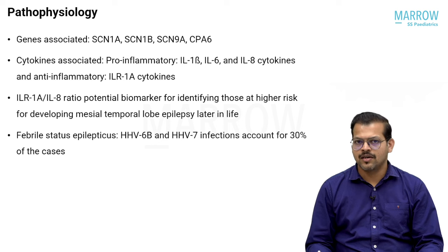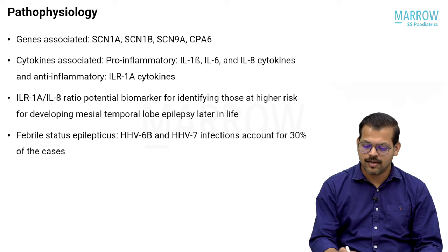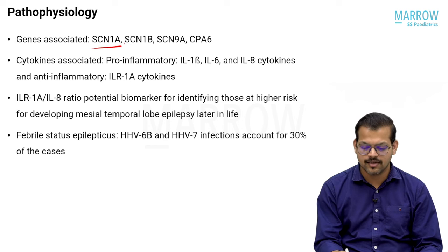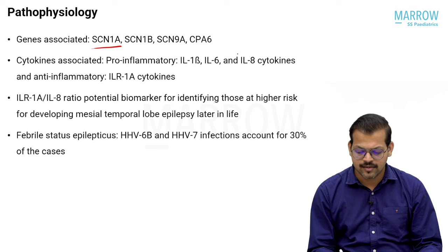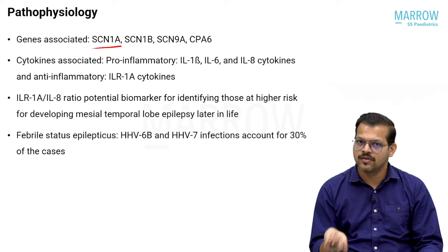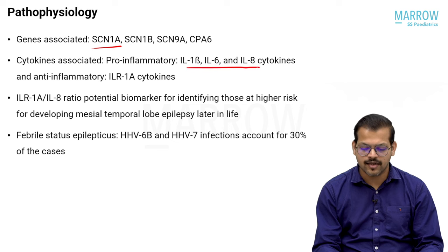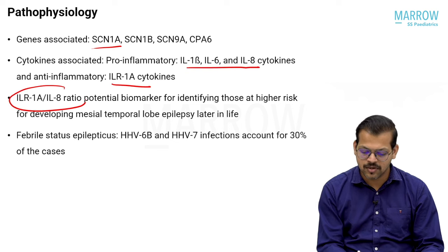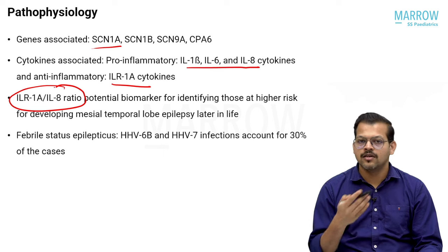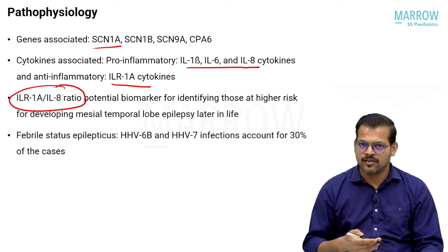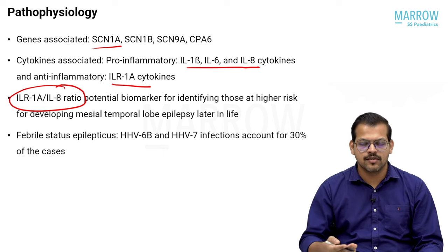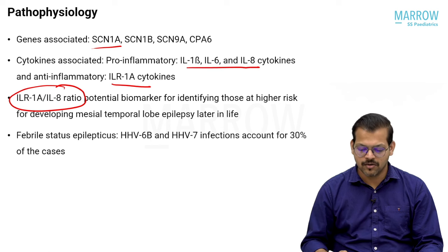The pathophysiology of febrile seizures is not fully clear, but associated genes include SCN1A (most common), SCN1B, GABRG2, and CPA6. Certain cytokines are also associated — pro-inflammatory ones include IL-1β, IL-6, and IL-8, and anti-inflammatory IL-1Ra. The ratio of these cytokines has been proposed as a potential biomarker to predict which children will develop temporal lobe sclerosis later in life.